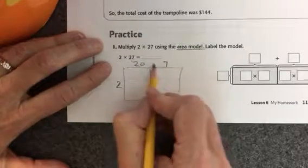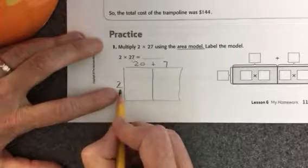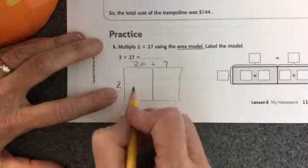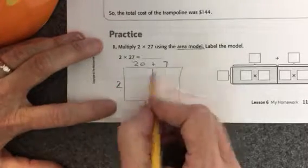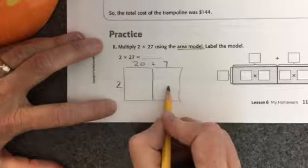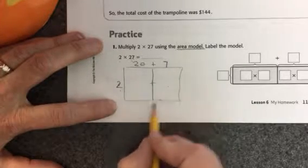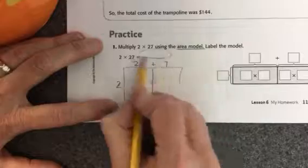And now I'll put my 2 here on the side. So this is basically 20 plus 7 multiplied by 2. 20 times 2, I write the answer here, and 7 times 2, I write the answer here. Then I add both of those together, and that will be my answer.